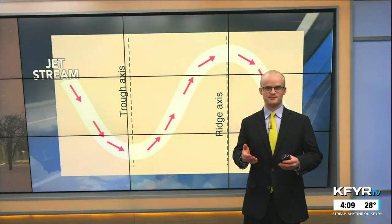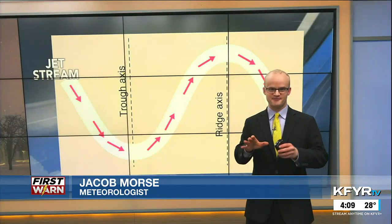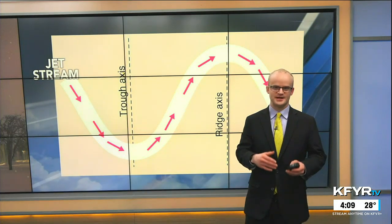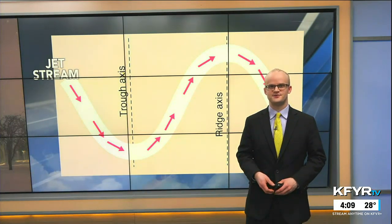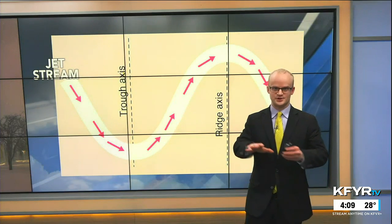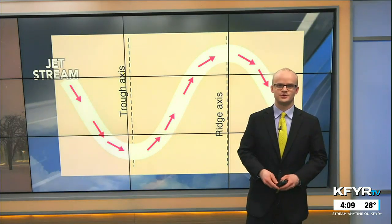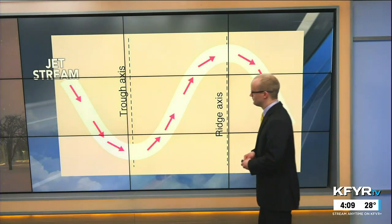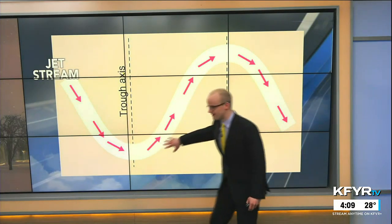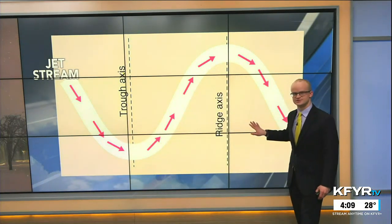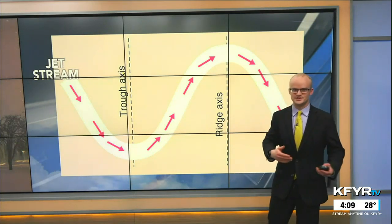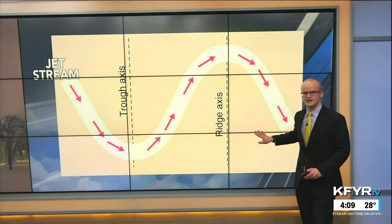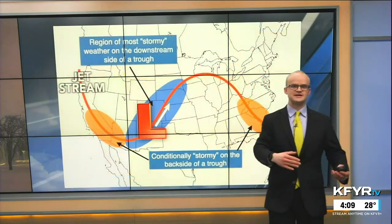We've talked about the jet stream before — it's that faster ribbon of winds moving well above our heads where planes fly, 30 to 35,000 feet up, and it really directs where storm systems move across the world. What happens with the jet stream as it meanders across the globe is it dips into troughs and rises into ridges, and this forms all the storminess that we see. Today we're going to talk about these troughs and ridges and how they create spin in the atmosphere.